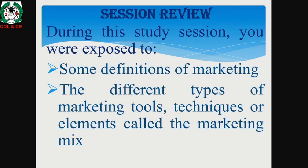So far, during this session, you were exposed to definitions of marketing and the different types of marketing tools, techniques and elements called the marketing mix. These elements, as we have discussed, are seven: place, product, promotion, price, physical evidence, people and process. The right blend, the right mixture, the right combination of these seven P's will give a business the strategic advantage to remain competitive, continue to create satisfaction, remain in existence, and to survive, grow and expand. Thank you very much.